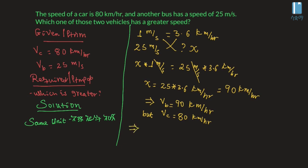So the velocity of car, vb is greater than vc. The bus is faster.